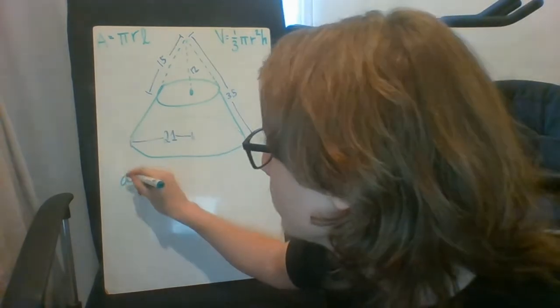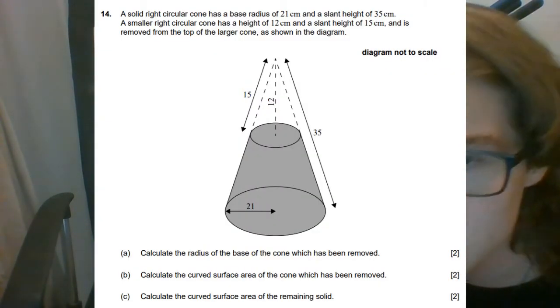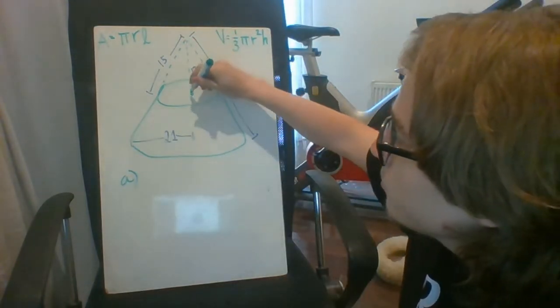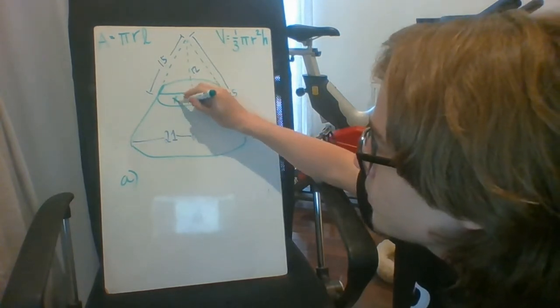So for part A, it asks us to calculate the radius of the base of the cone which has been removed. So we're looking at the top one. The value we're looking for is the radius right here, which we're gonna call x.